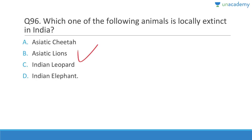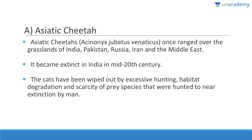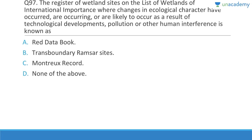Question 96: Which of the following animals is locally extinct in India? Asiatic lions can be found in Gujarat, Indian elephants and Indian leopards are present in various states, but the Asiatic cheetah is gone from India. Acinonyx jubatus venaticus once ranged over the grasslands of India, Pakistan, Russia, Iran, and the Middle East. It was wiped out due to excessive hunting by British rulers and princes of princely states, habitat destruction, and scarcity of prey species.